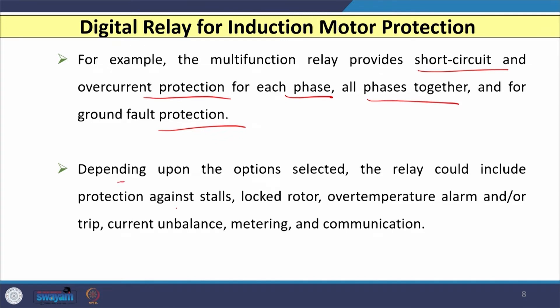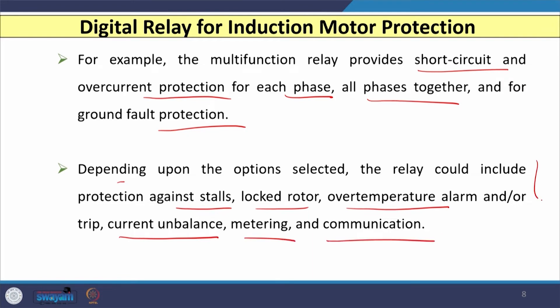Further, protection against stalling is available, locked rotor protection is available, alarms for increase in temperature, protection against reverse phase sequence or unbalanced voltages, metering functions, and communication — all these functions are clubbed and available in a single unit known as the digital relay.